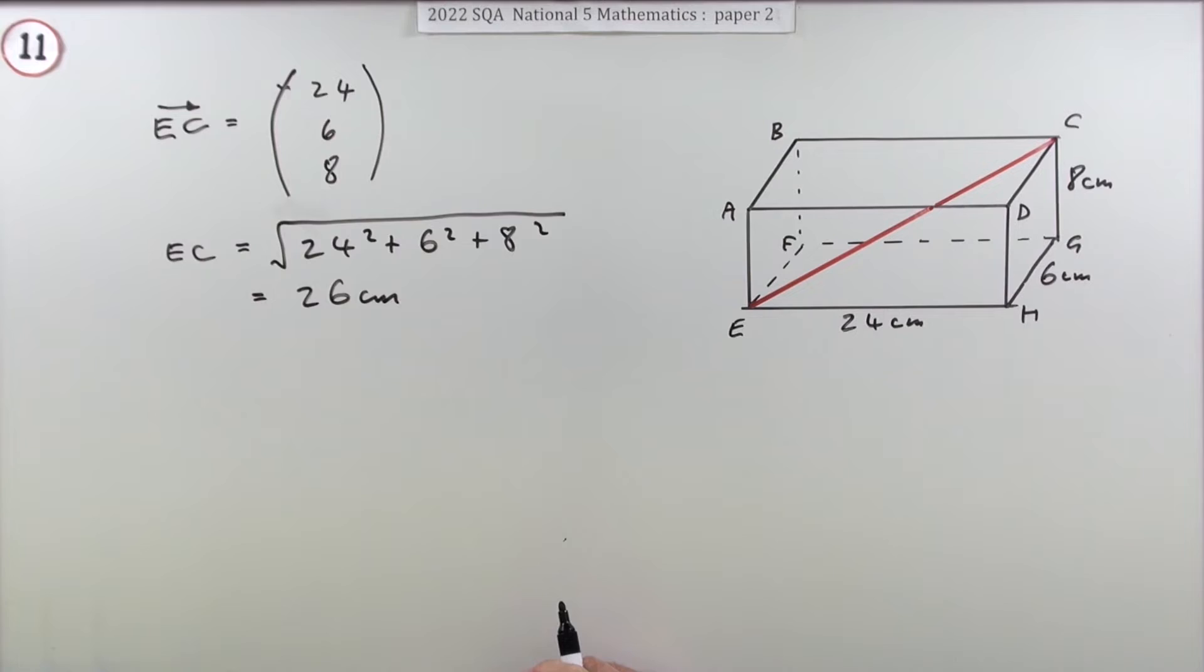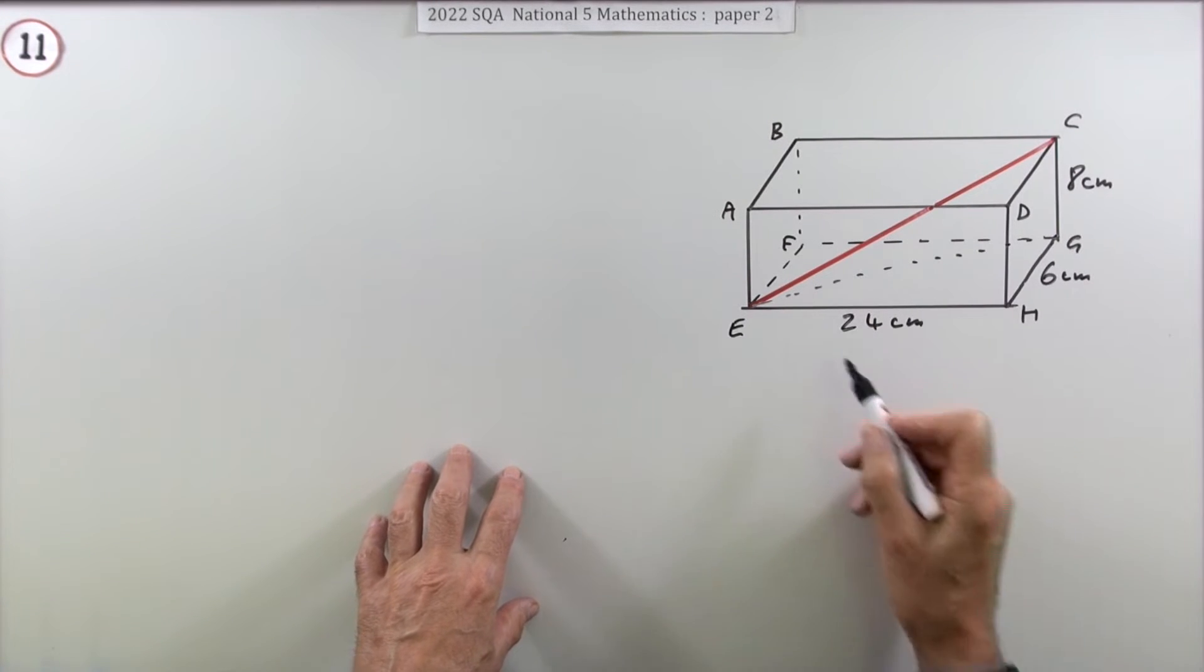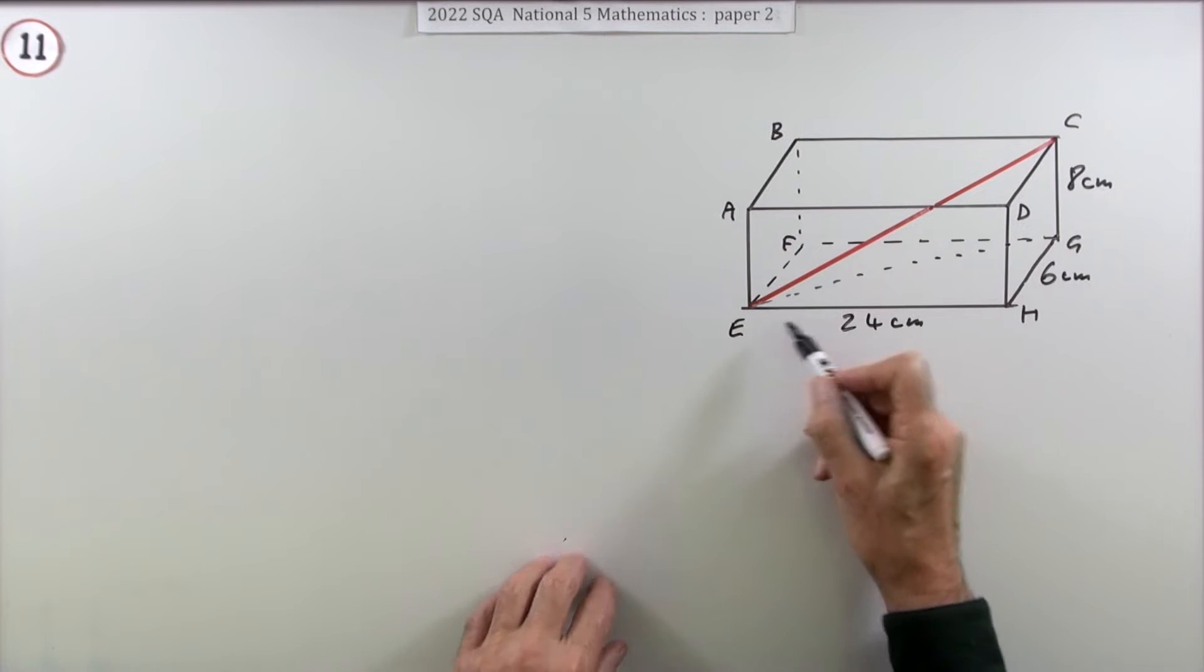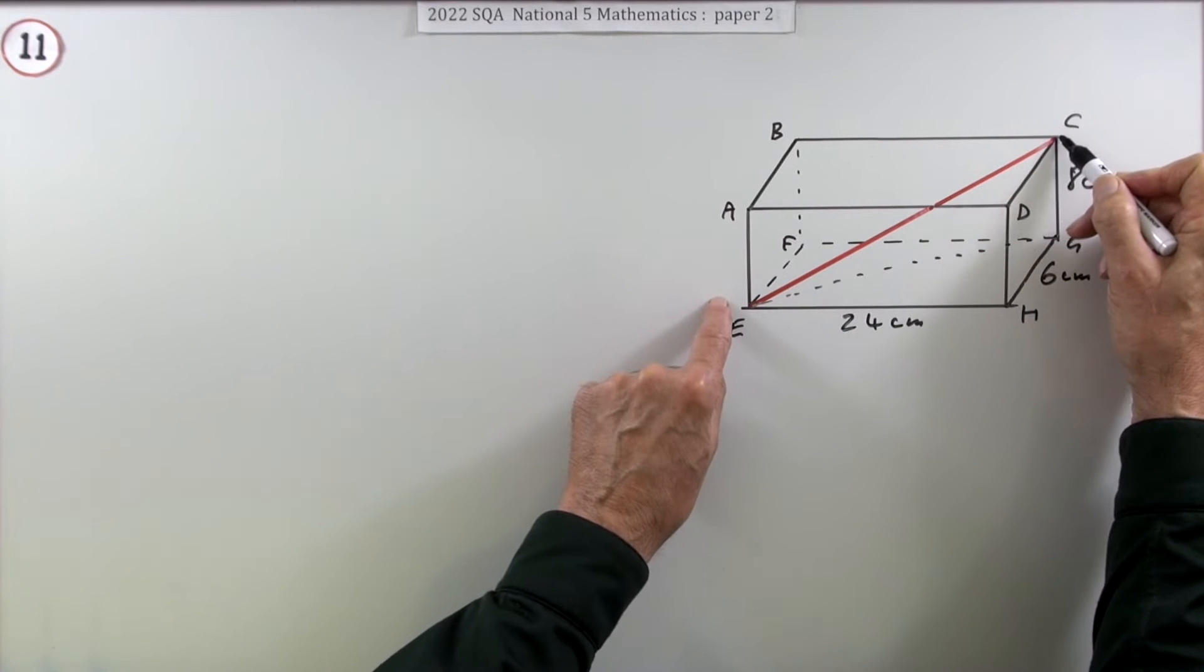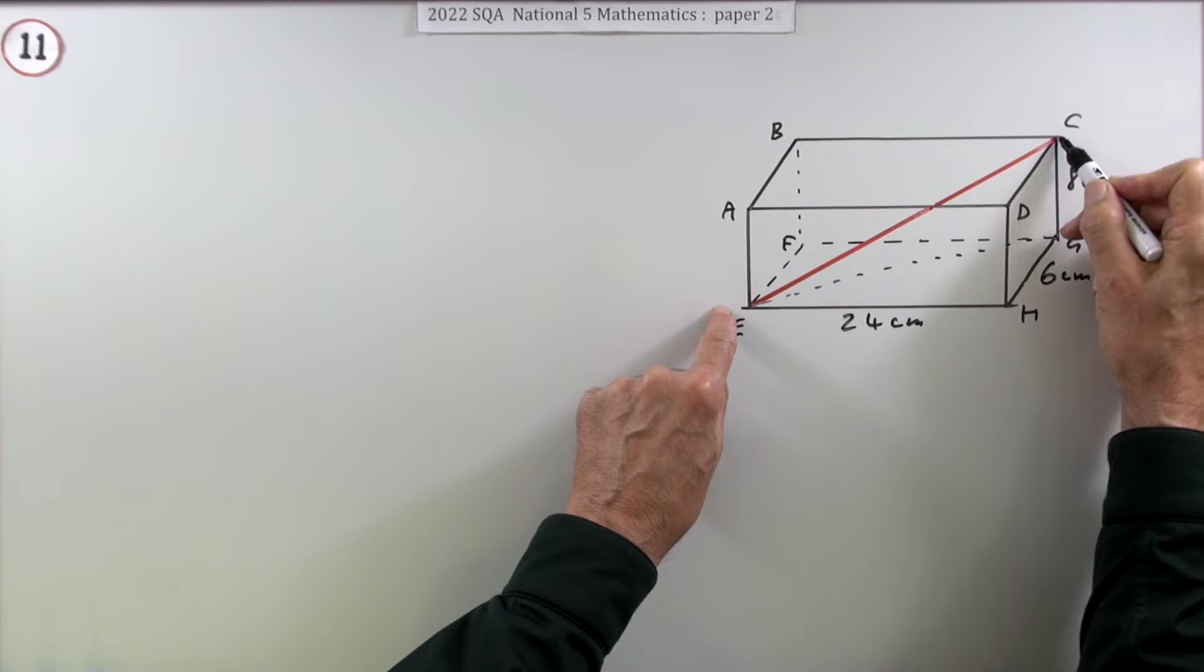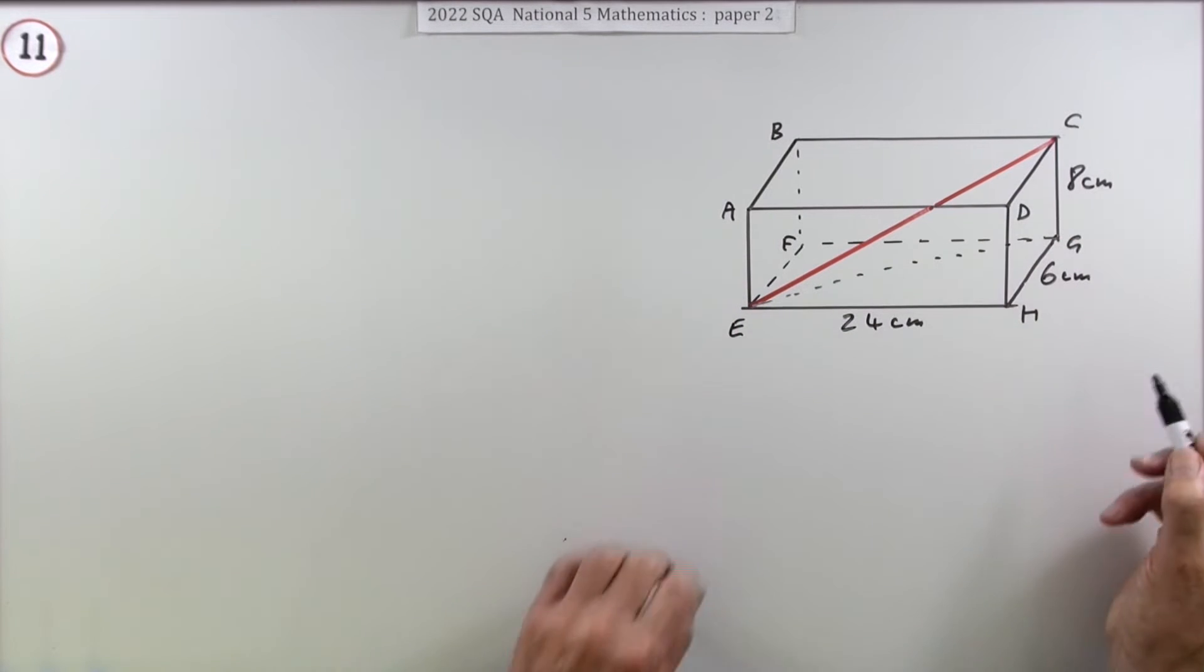This year you'll have to do it the long way and find routes that will take you there by calculating intermediate parts. To work out the length of EC, you'd want it to be part of a right triangle. If you just dropped that down, you'd have the triangle EGC.